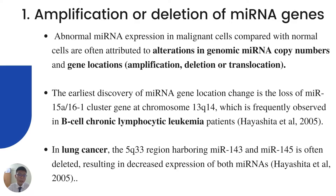For the first mechanism, the abnormal miRNA expression in malignant genes compared to normal cells is often attributed to alterations in genomic miRNA copy number and gene location, such as amplification, deletion, or translocation. The earliest discovery of a miRNA gene location change is the loss of miRNA-15a or miRNA-16 cluster genes in B-cell chronic lymphocytic leukemia.